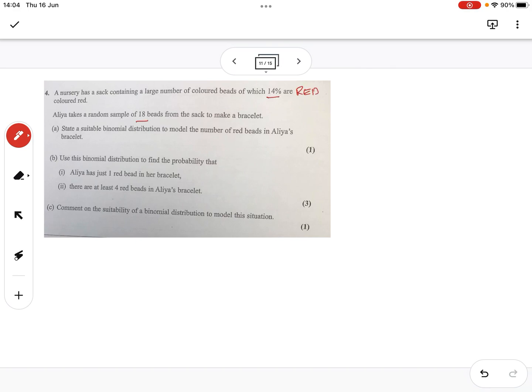We've got 18 beads - a random sample of 18 beads from the sack. I'll come back to suitability. We know it's binomial, so n=18 and the probability of success, getting a red bead, is 0.14.